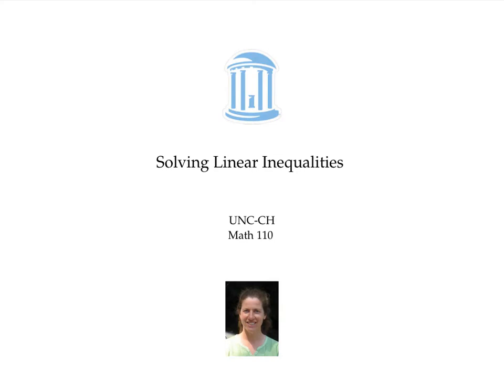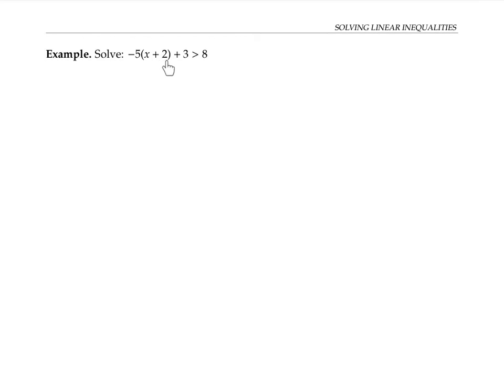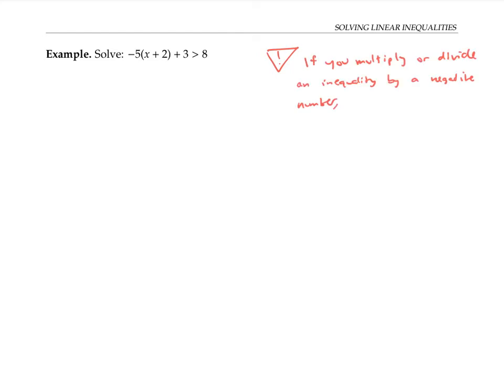This video is about solving linear inequalities — inequalities that involve a variable like x, but don't involve x squared or other higher power terms. We can solve linear inequalities just like linear equations: by distributing, adding and subtracting terms to both sides, and multiplying and dividing by numbers on both sides. The only difference is that if you multiply or divide by a negative number, you need to reverse the direction of the inequality.